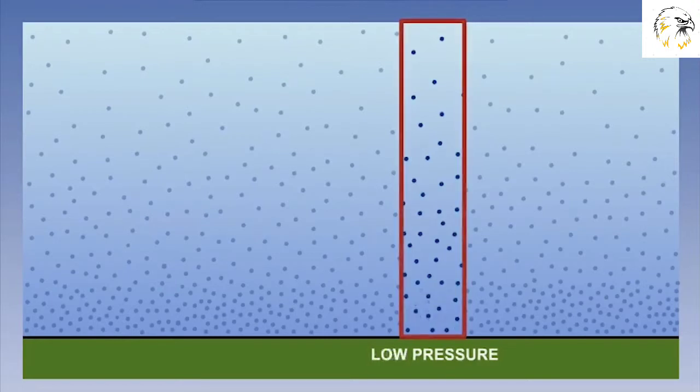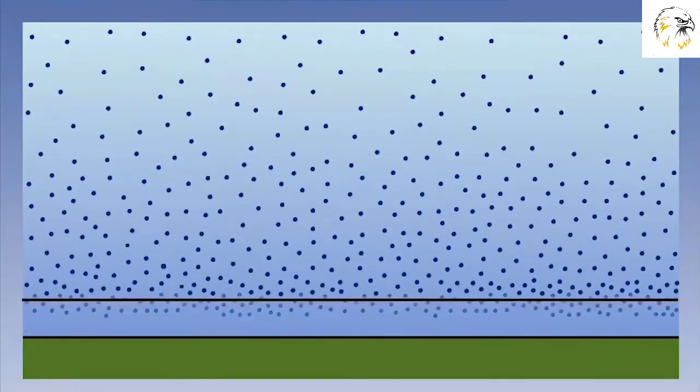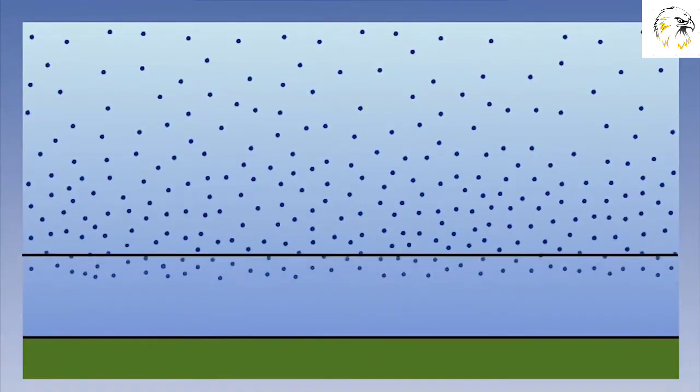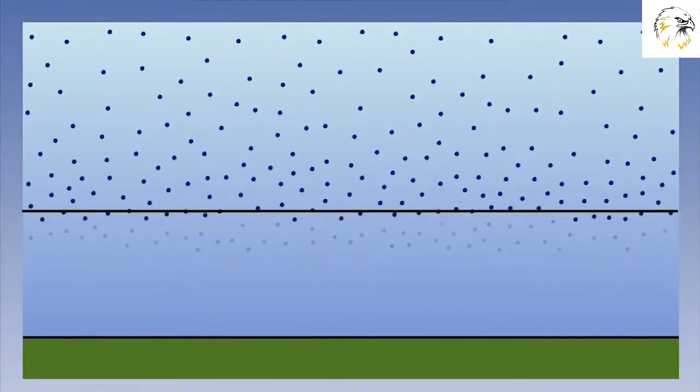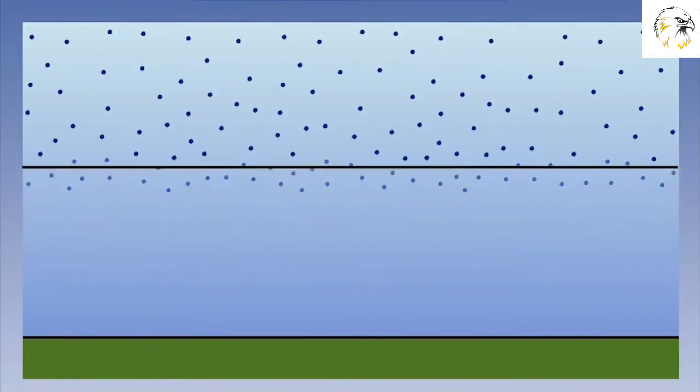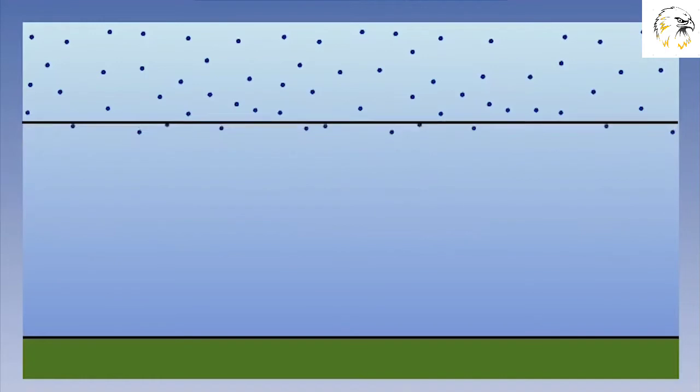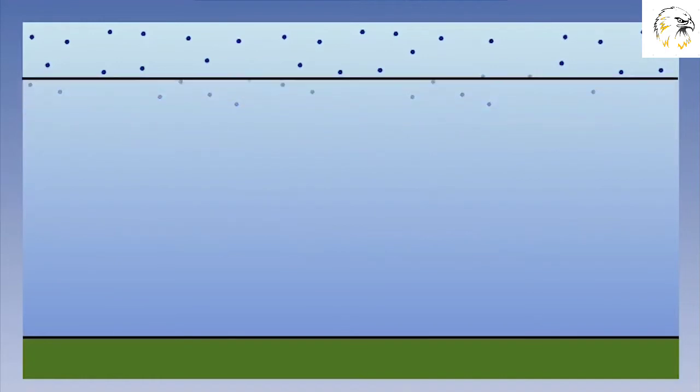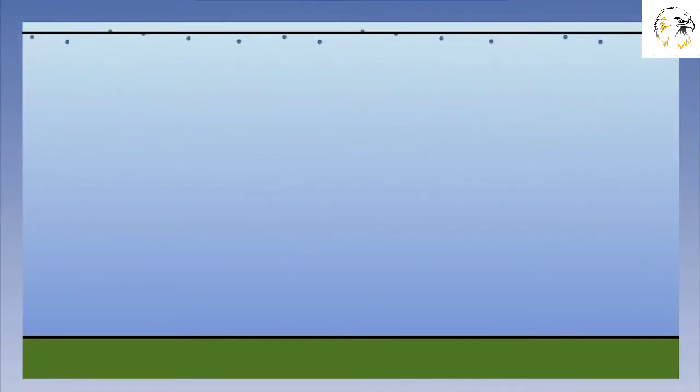The less air in the column, the less the pressure will be at the surface. The higher and higher we go in the atmosphere, the total amount of air overlying us decreases. Therefore, the less the weight of air above, the less the atmospheric pressure. So, pressure decreases with altitude.